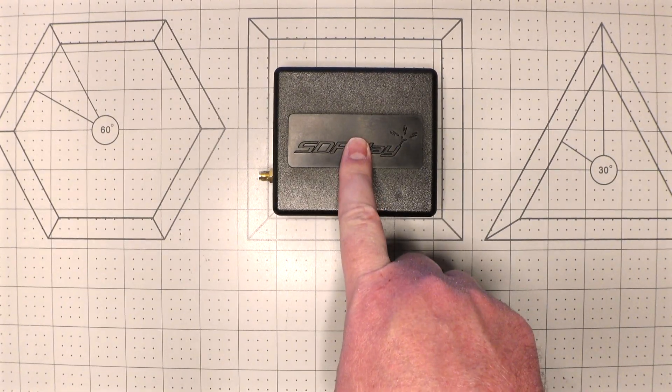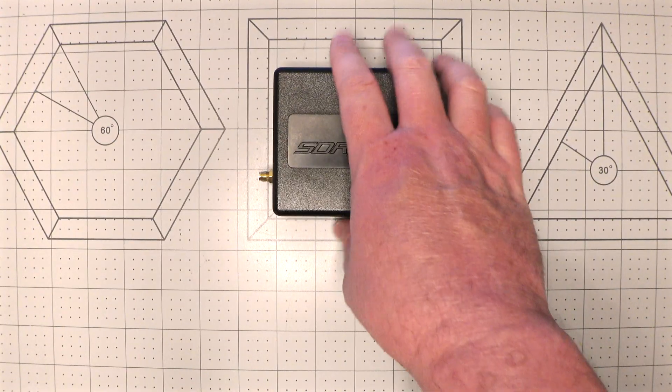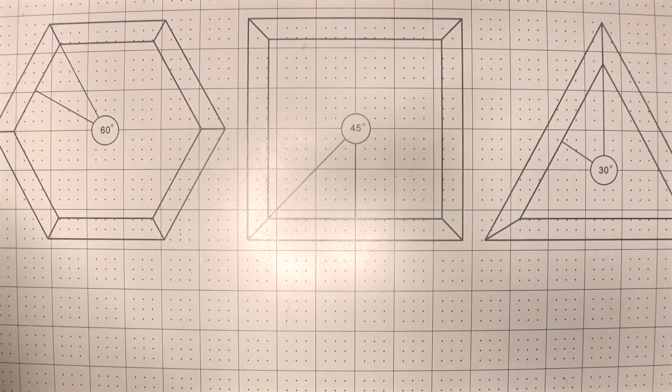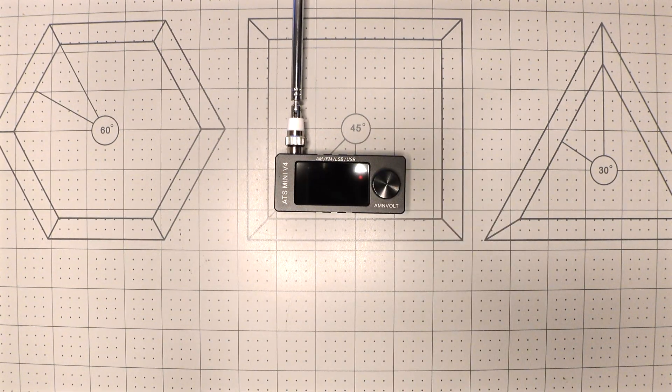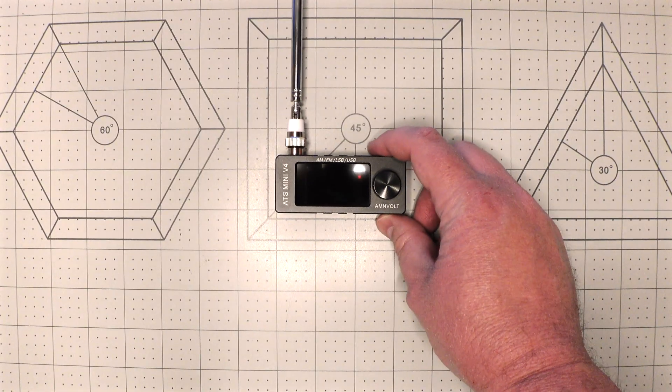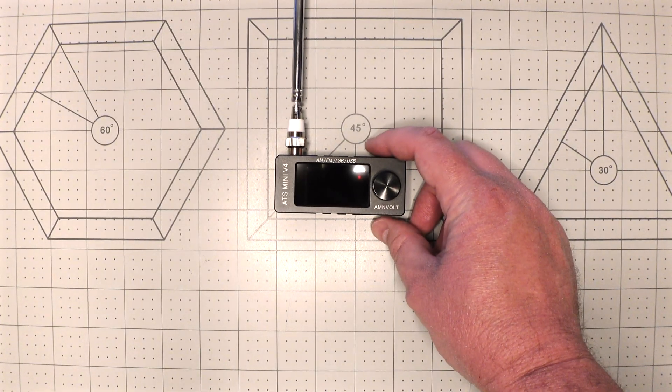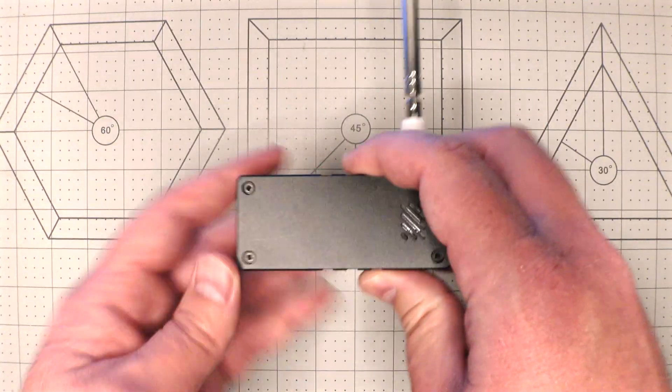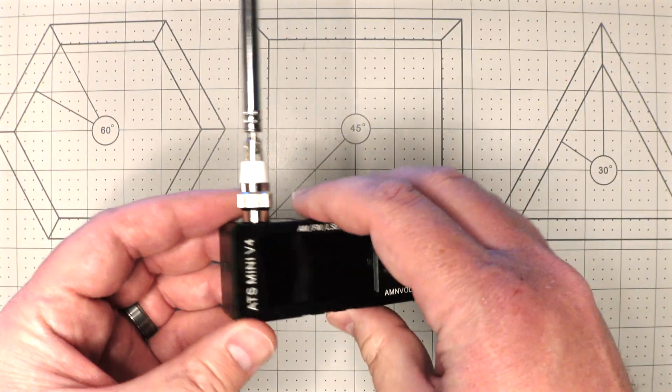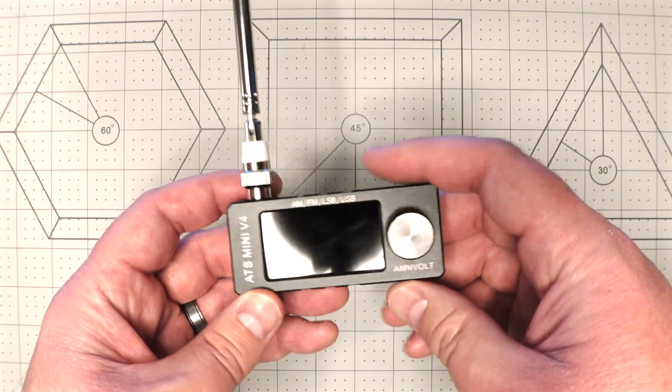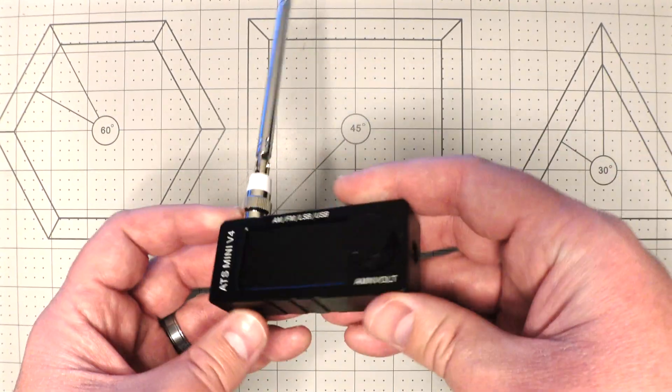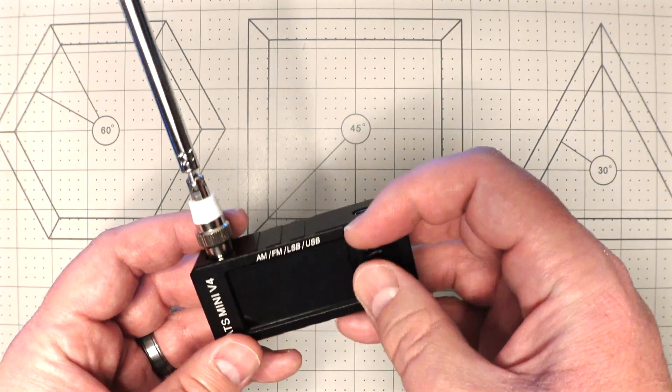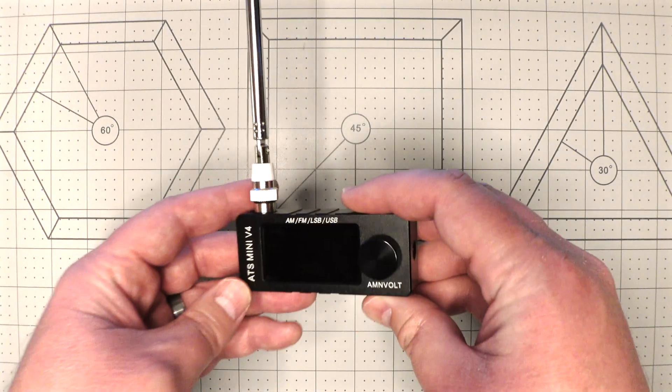However, Banggood was kind enough to send me something that has changed my perspective on things. This is the ATS Mini V4, this is also a software defined radio. Now this one is the one in metal. There are two versions: there's one in injection molded plastic and then there's one that is this aluminum alloy metal. I decided to go with the metal. I said, I think that's the one that I'd be interested in and I think it's the one that my viewers would be interested in.